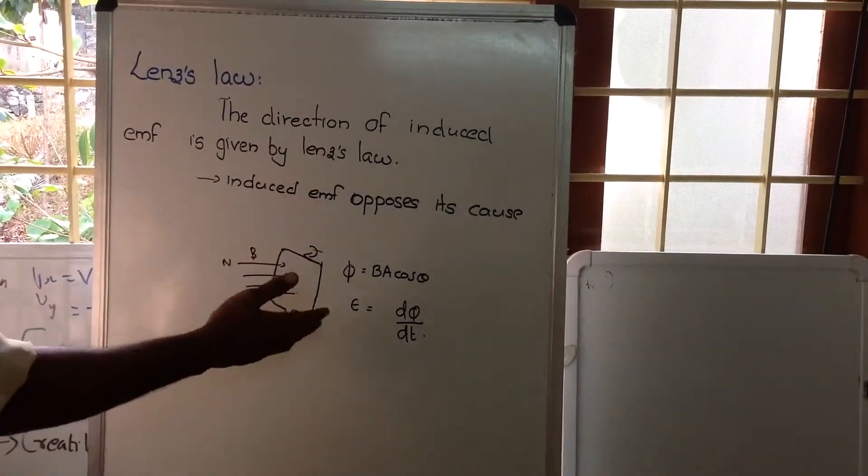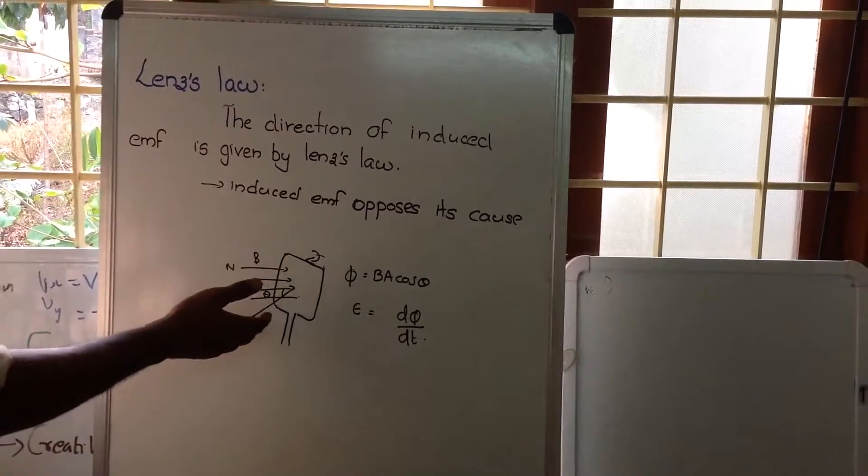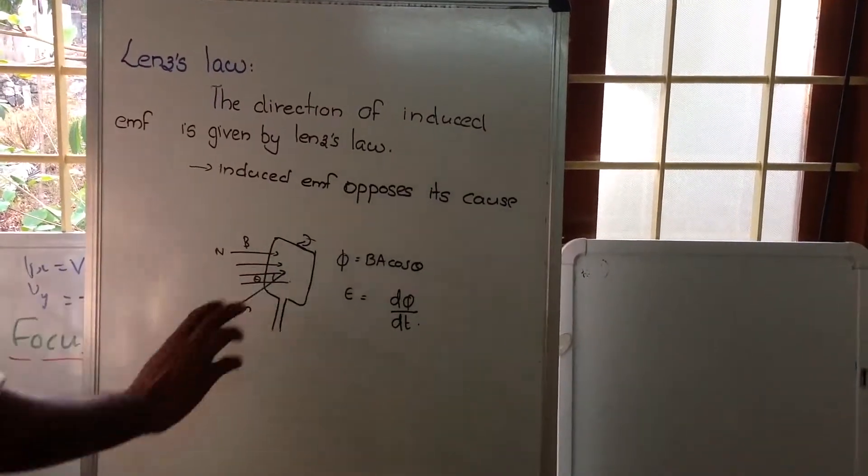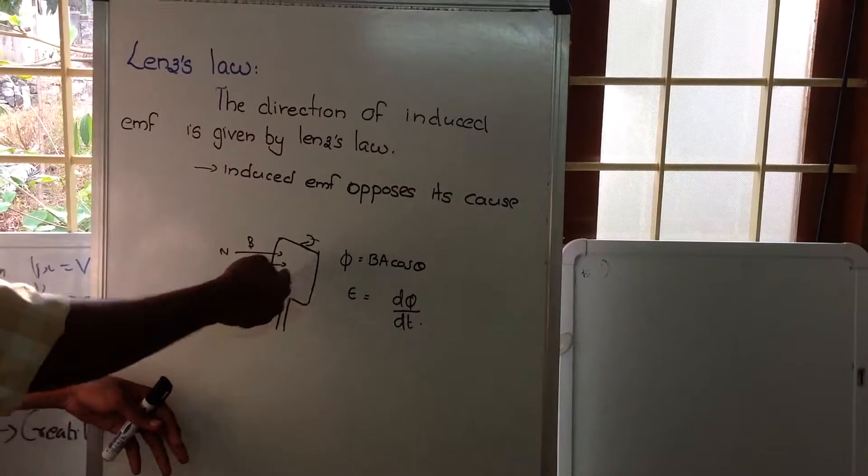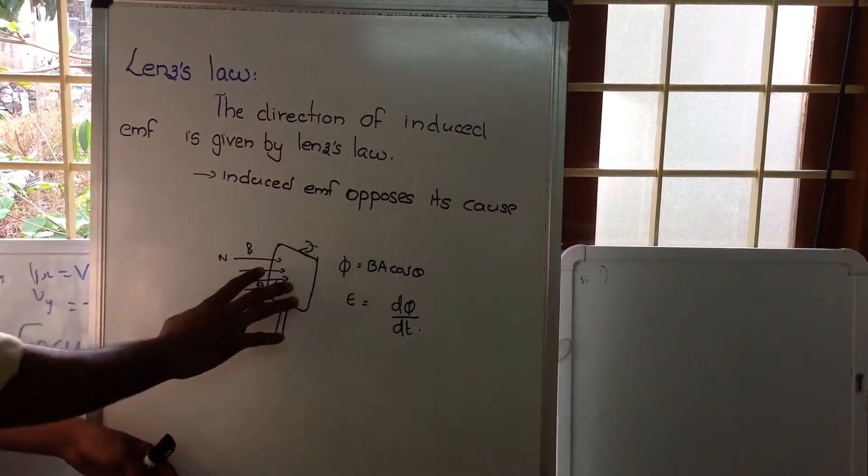For that, let us consider a coil and we are having a magnetic field. We are introducing a magnetic field to the coil and let the angle between the normal of that area and magnetic field be theta.